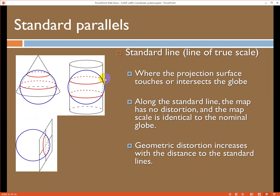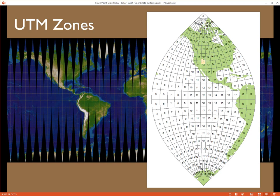So these points at which the developable surface touches the sphere is called a standard line or a secant. It's the place, it's the only place on the map where the scale, the distortion is zero or the scale is true. It's where the projection surface touches the globe or intersects the globe. Along that line, the map has no distortion. The scale is identical to the nominal globe, if that makes sense. As you move away from those points, distortion increases.